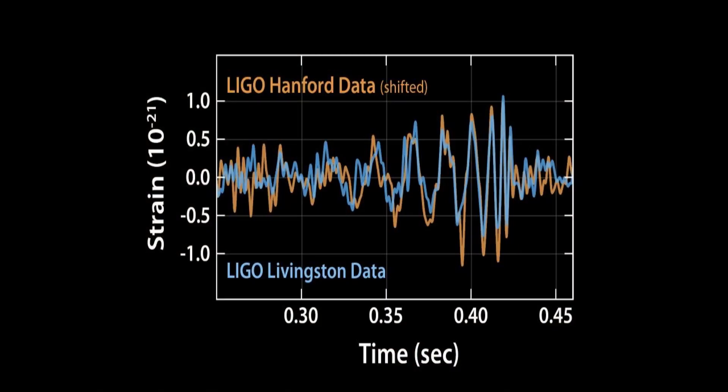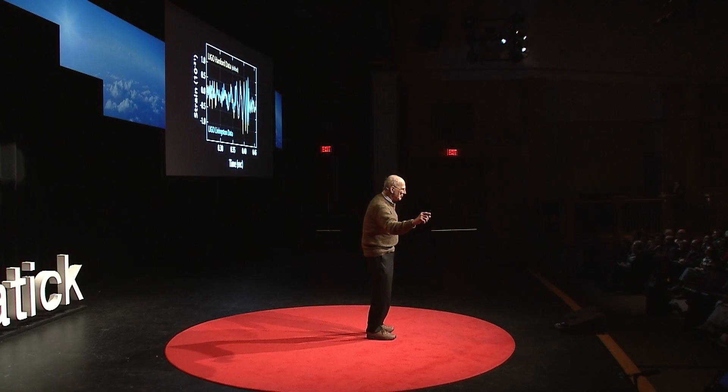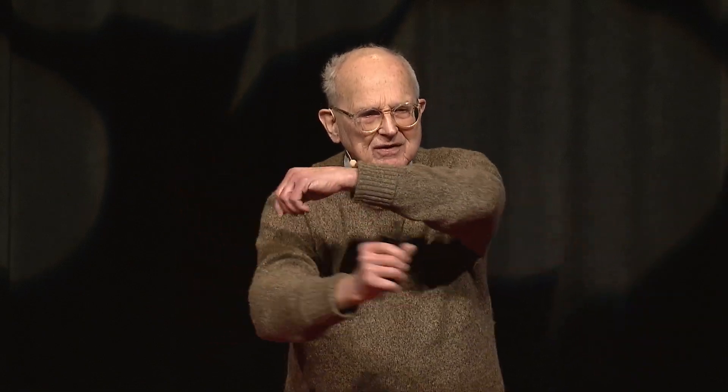Here is what we discovered. The horizontal axis is time and the vertical axis is the strain measured by these instruments. There are two curves: a blue one measured in Louisiana and a yellow one measured at Hanford. They had to be slid about seven milliseconds to match each other. There's junk on the left and right — that's just noise — but something in the middle is building up. That was two black holes weighing 30 solar masses doing a dance in space one billion years ago, going around each other and smashing together at the end of that waveform.